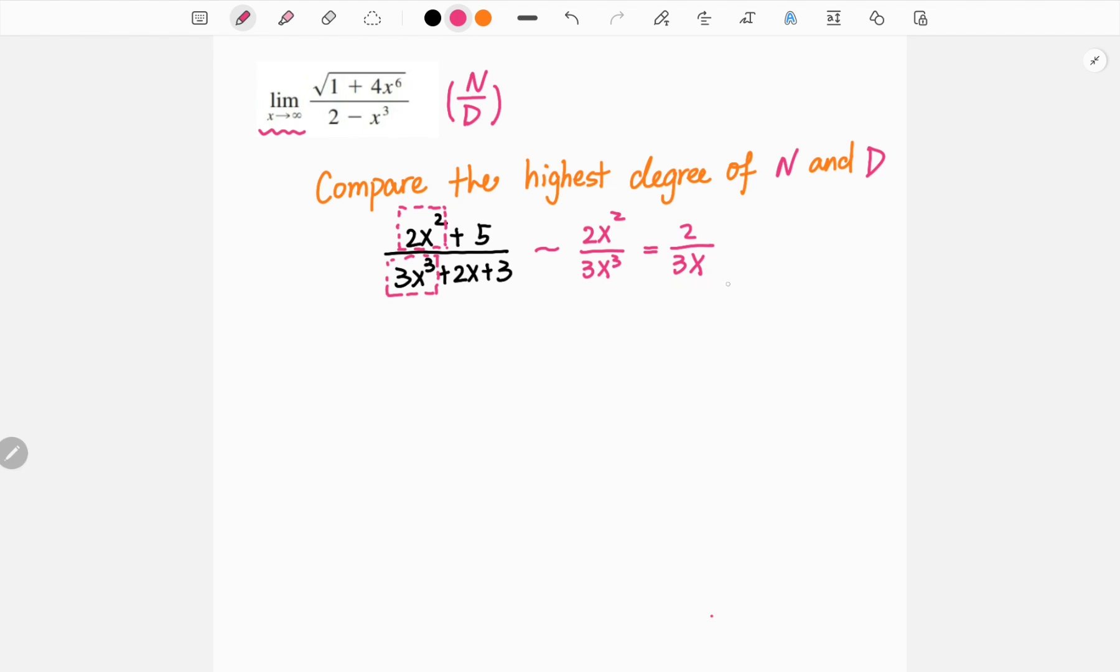So once we calculate this simplified term, we have three categories we can look into. The first case is when the degree of numerator is less than the denominator. What I mean is we're going to have limit x goes to infinity, and then we're going to have terms such as 1 over x or 1 over x².